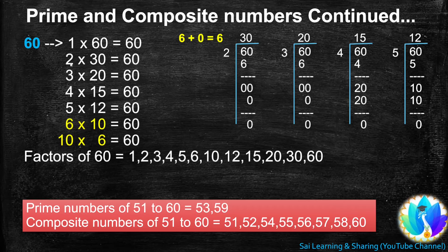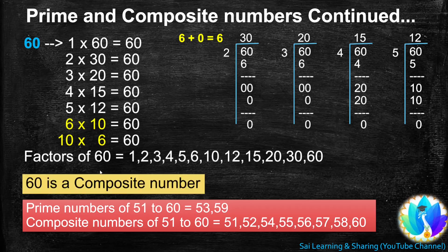Now we have all the factors of 60: 1, 2, 3, 4, 5, 6, 10, 12, 15, 20, 30, and 60. Since 60 has more than 2 factors, 60 is a composite number.